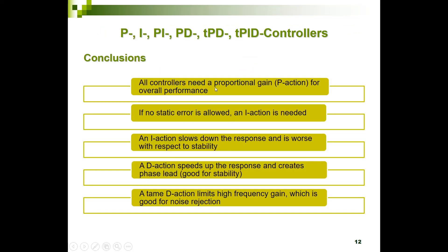In summary: all controllers need a proportional P action to achieve overall performance. If no static error is allowed, use an I action — but be aware it slows the response and negatively impacts stability. A D action speeds up the response and creates phase lead, which is good for stability. Adding a low-pass filter to the D action limits high-frequency gain and improves noise rejection. That's it for feedback controllers — thank you for watching.